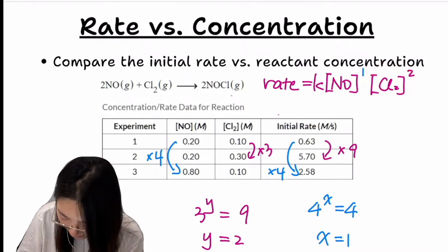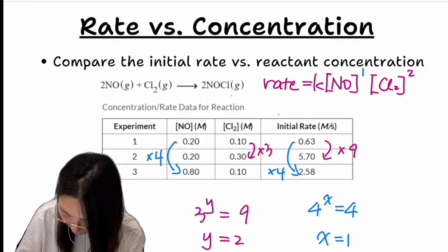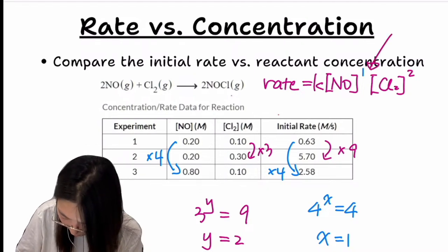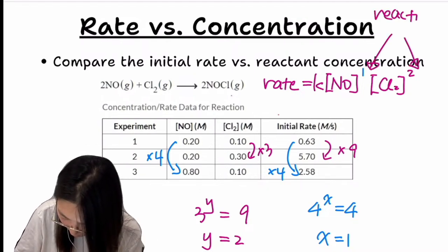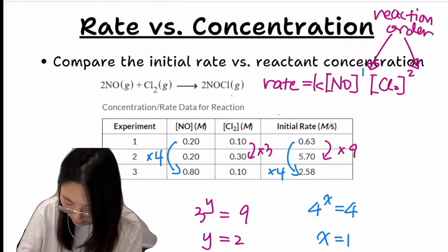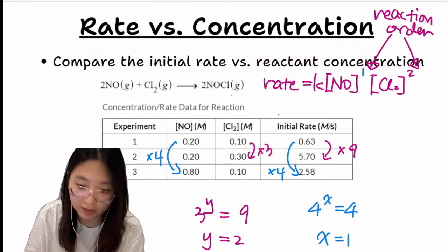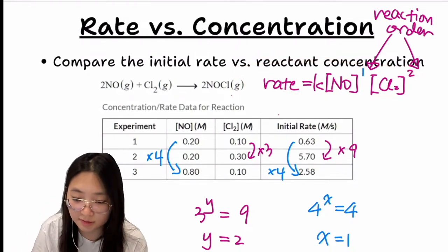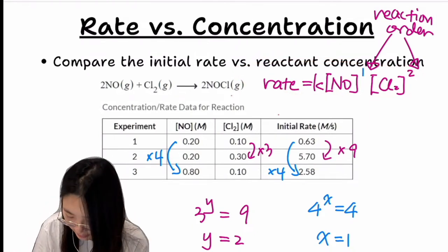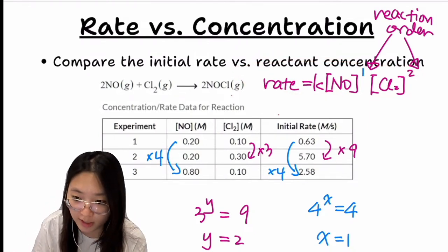These exponents are called the reaction order. For this reaction in total, we say this is a third-order reaction.